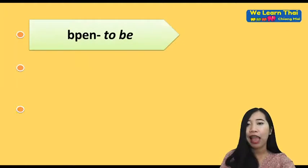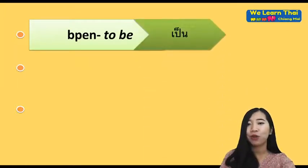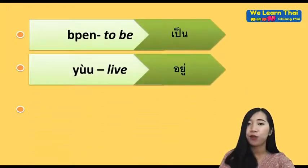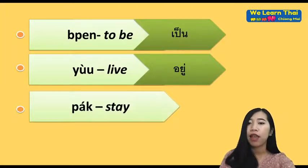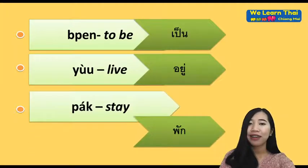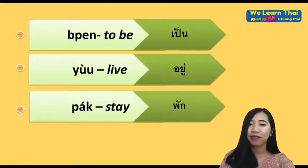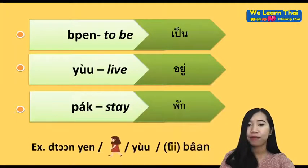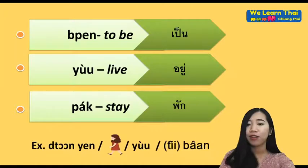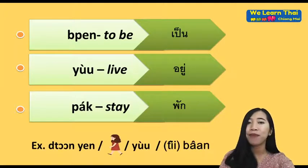เป็น (pen) means 'to be.' อยู่ (yu) means 'to live' or 'to stay.' พัก (phak) means 'to stay' or 'to rest.' For example: ตอนเช้า ดิฉันอยู่ที่บ้าน — In the morning, I am at home.